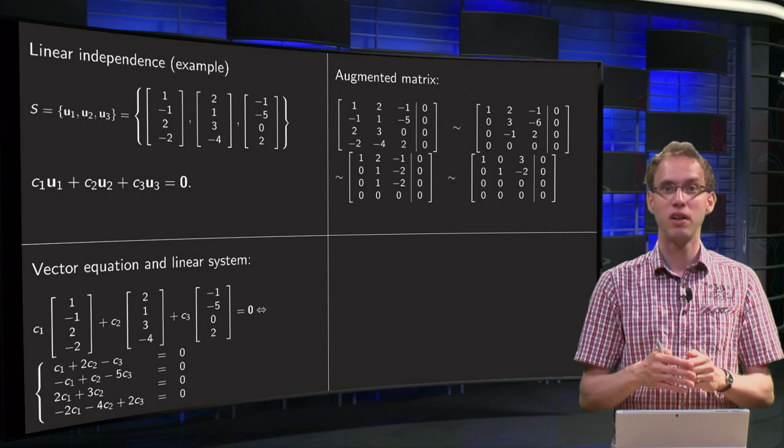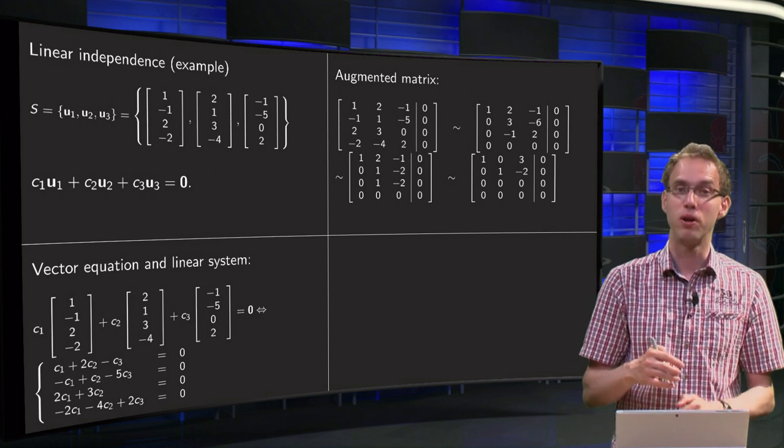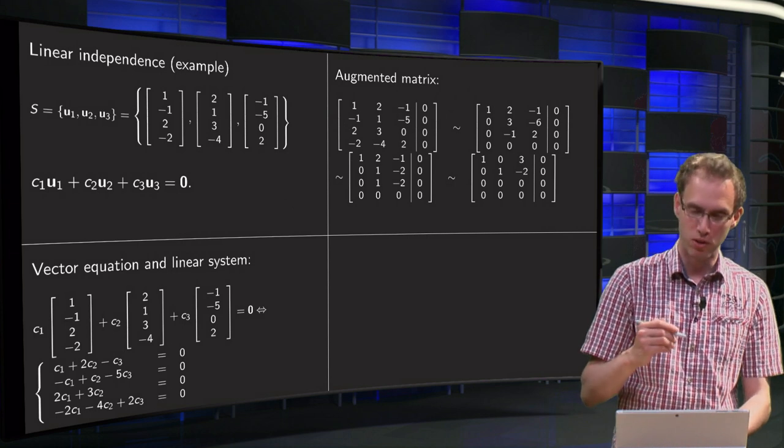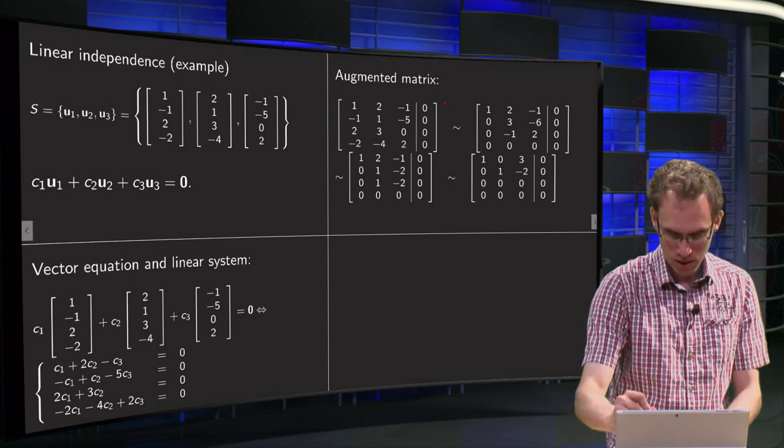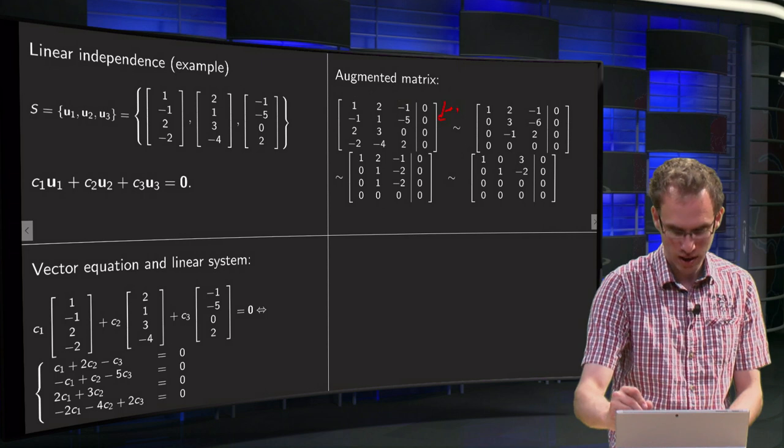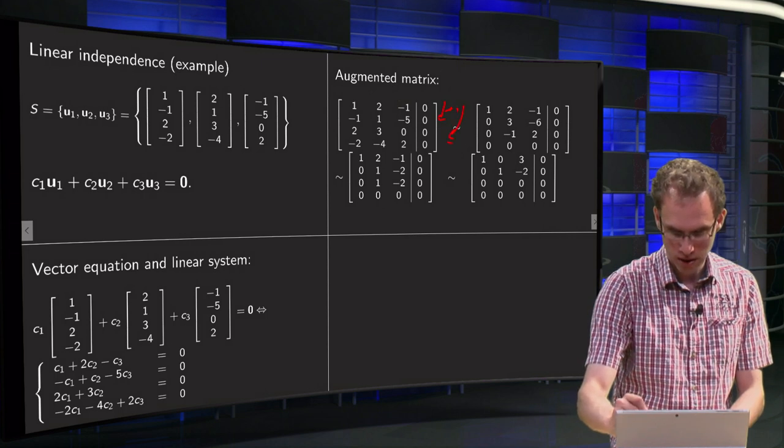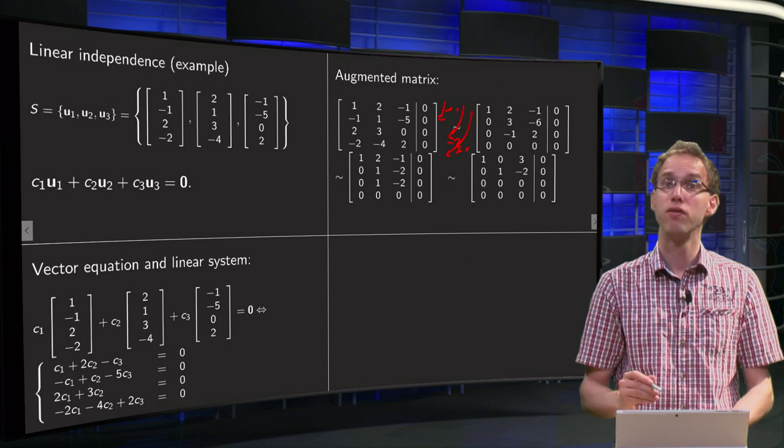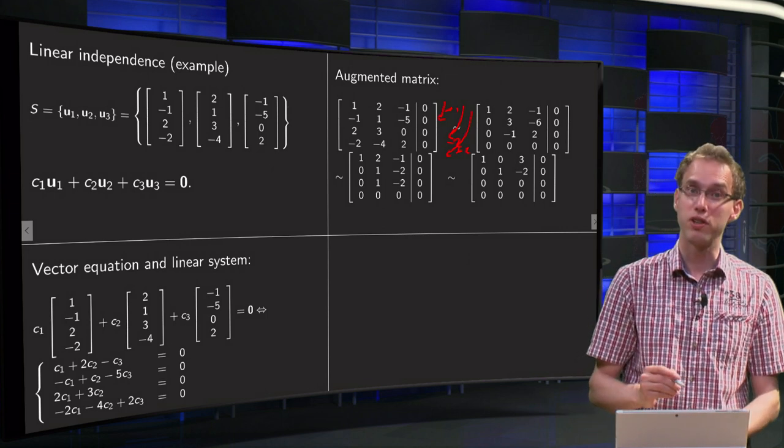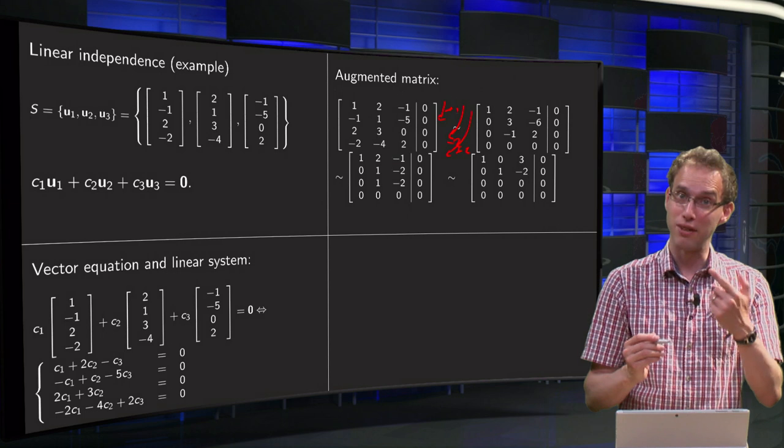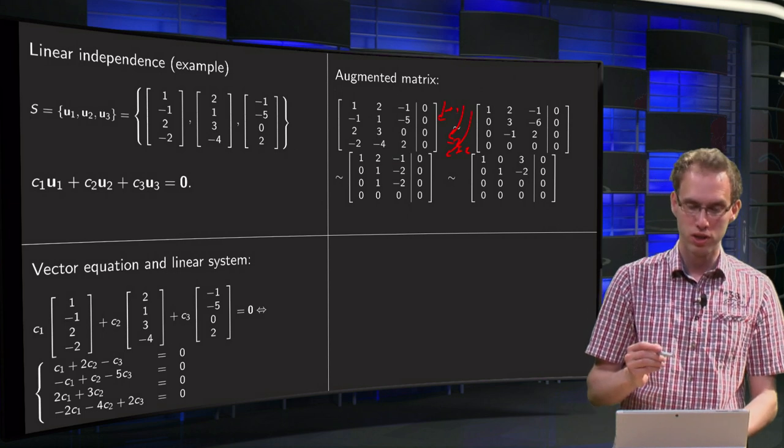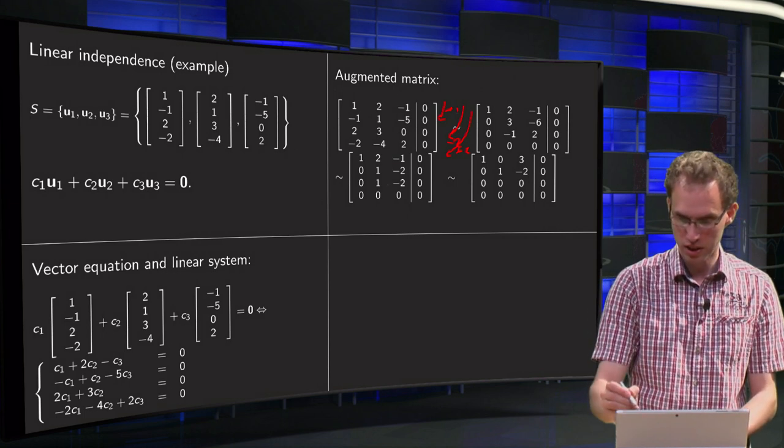After the bar we get only zeros, and before the bar we get some numbers. Now we do the row reduction: plus 1 over here, minus 2 over there, plus 2 over here, first row remains the same. For the second row we add the first row to the second row, so we get a 0, a 3, and a minus 6.